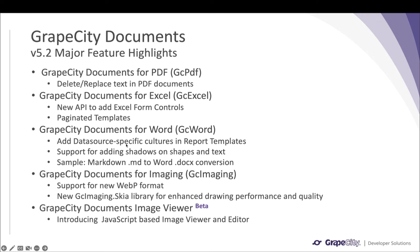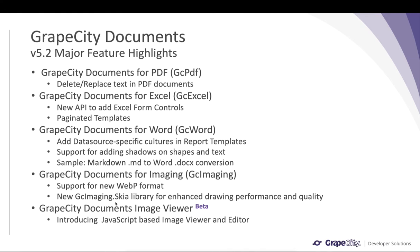In GC Word report templates you will now be able to specify a specific culture to a specific data source when adding data sources to the template. We have introduced a new API to add shadows on shapes and text in word files, and a new sample with full source code to convert markdown .md files to Word .docx files. In GC Imaging we have added new WebP format support, introduced the new gcimaging.skia library for enhanced drawing performance, and introduced a new JavaScript-based image viewer and editor called GrapeCity Documents Image Viewer as a beta release.